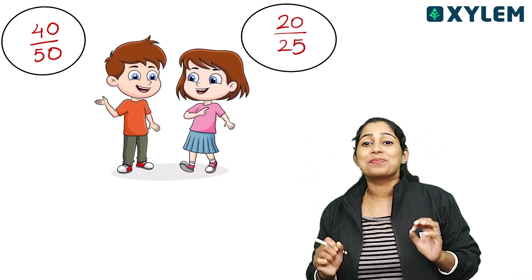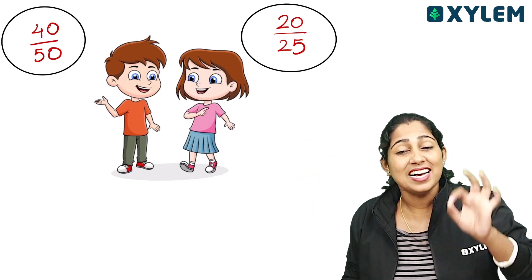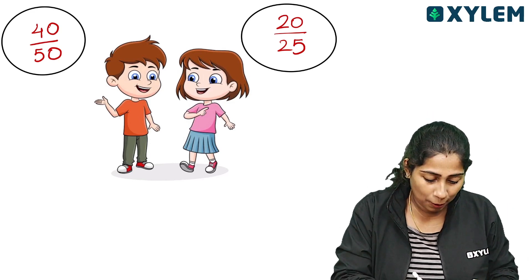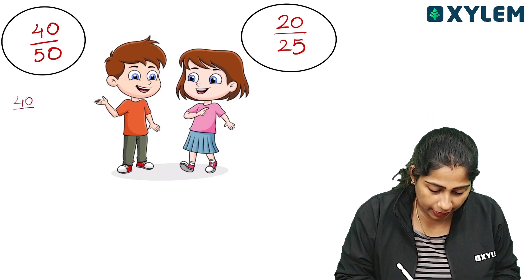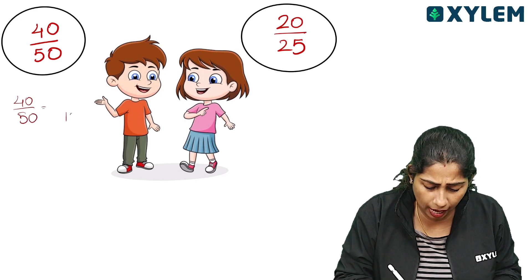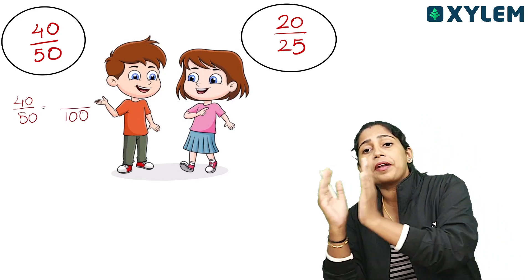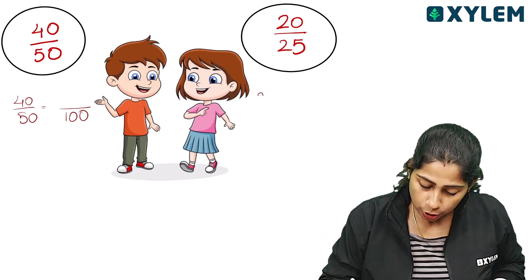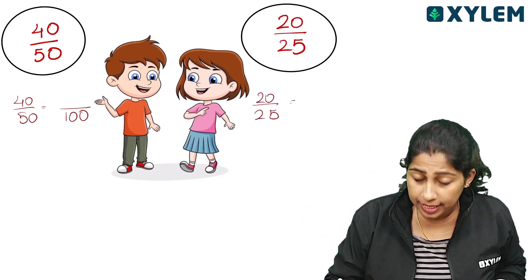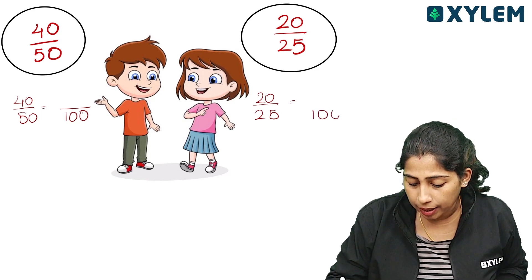So we use percentage to make comparison easier. We convert both scores so the denominator is 100. For 40 by 50, we convert to make the denominator 100. Similarly for 20 by 25, we make the denominator 100.